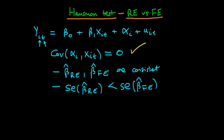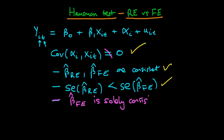Now we are almost in position to set up our test statistic. The final thing we need to note is that if the above assumption is not true, then it is not the case that both random effects and fixed effects are consistent. If that assumption fails, fixed effects is solely consistent — meaning random effects is no longer consistent.